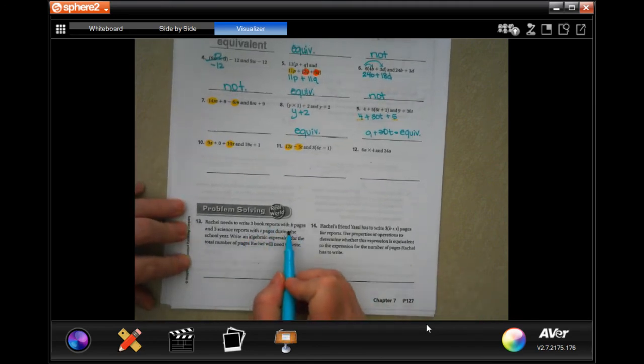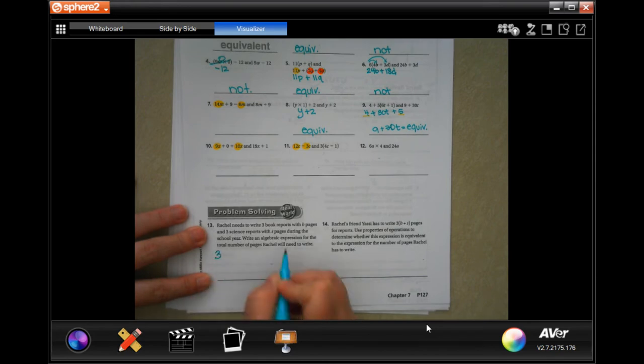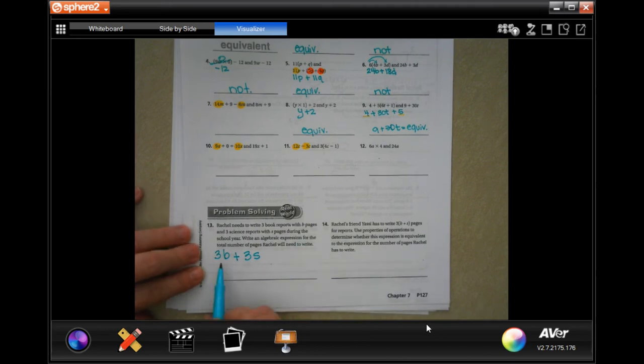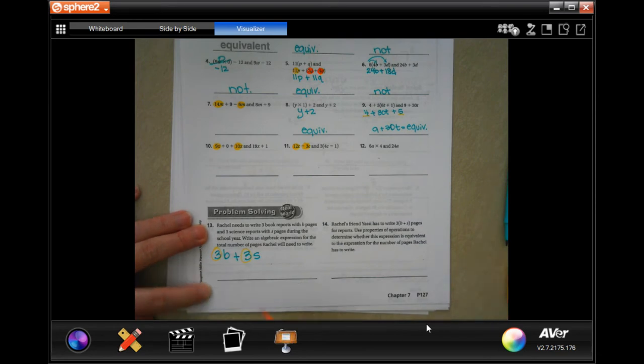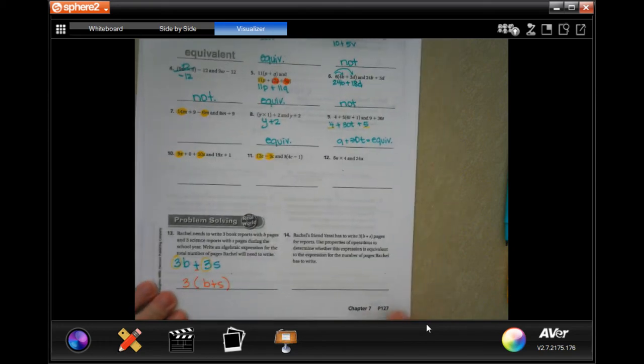Rachel needs to write 3 book reports with B pages and 3 science reports with S pages during the school year. Write an algebraic expression for the total number of pages Rachel will need to write. So, 3 book reports with however many pages and 3 science reports with however many science pages. Well, that means that we can pull out that 3 and do 3 onto B, we keep that sign and S. You can write it like this. There's nothing wrong with that. You want to get fancy? Show off a little bit? Do that one.